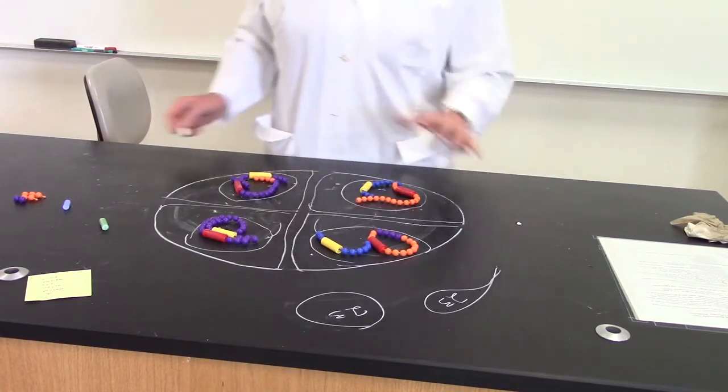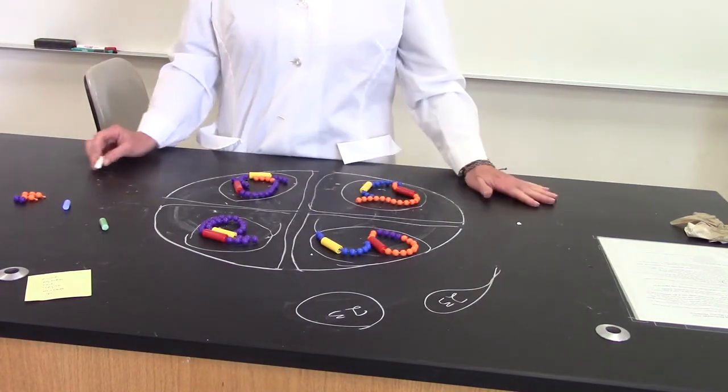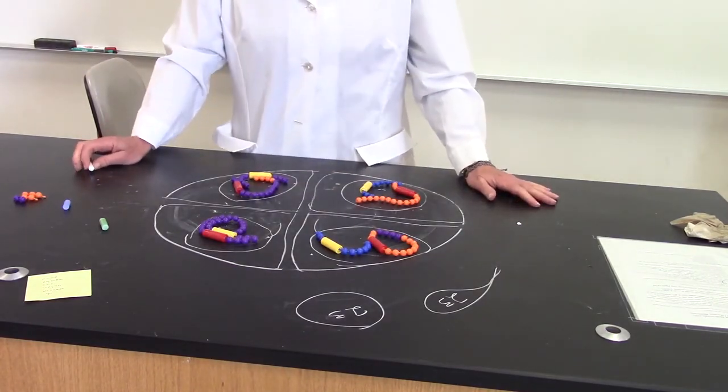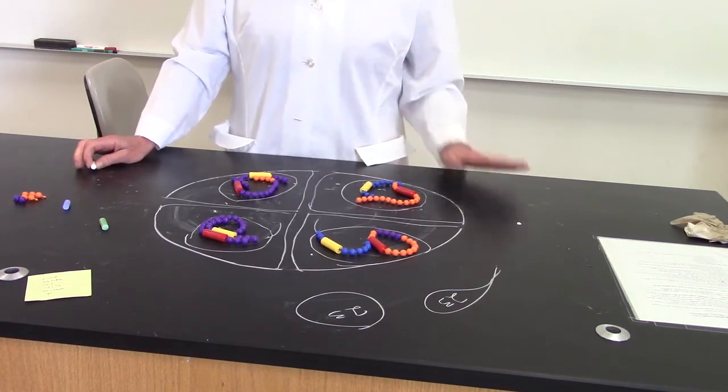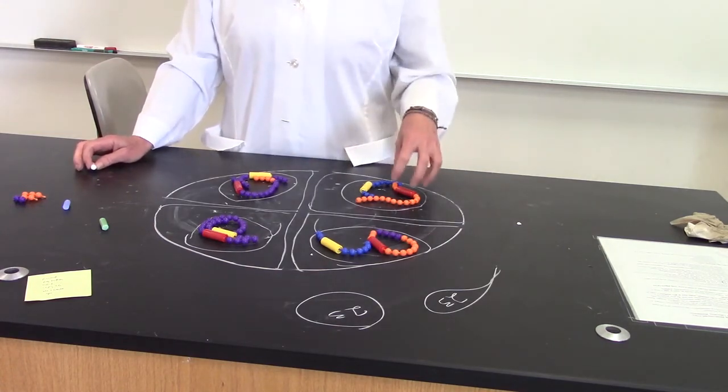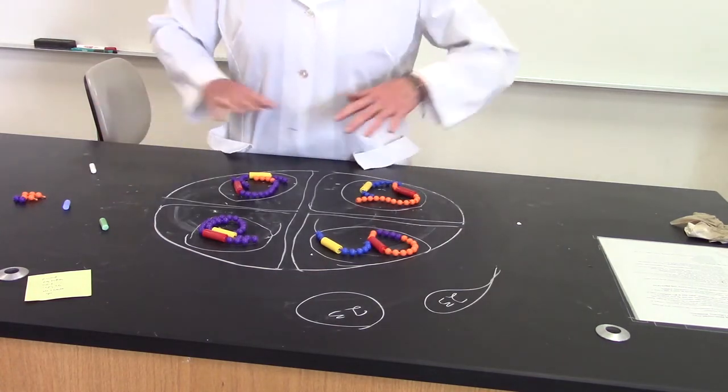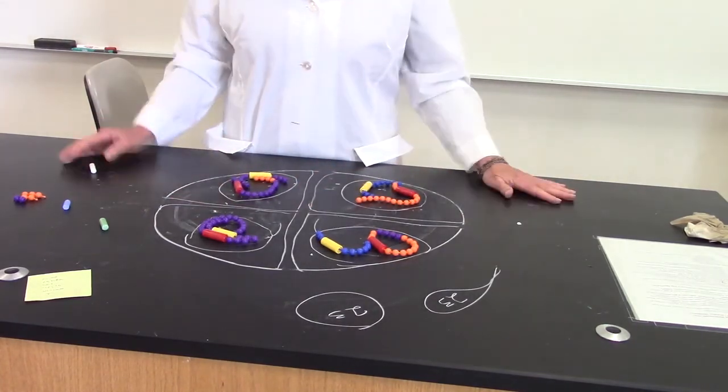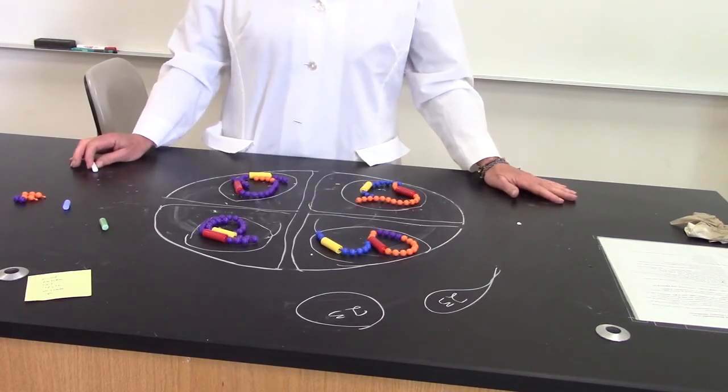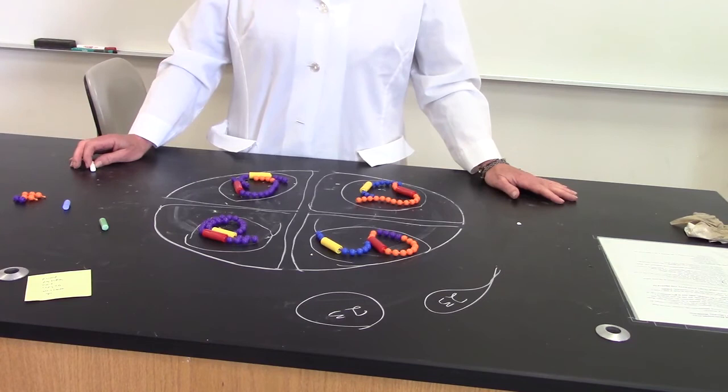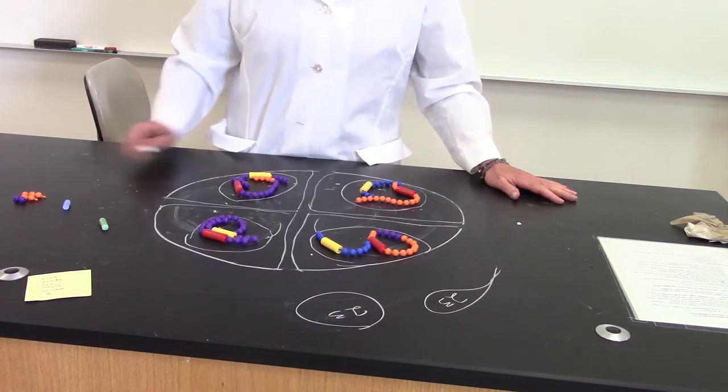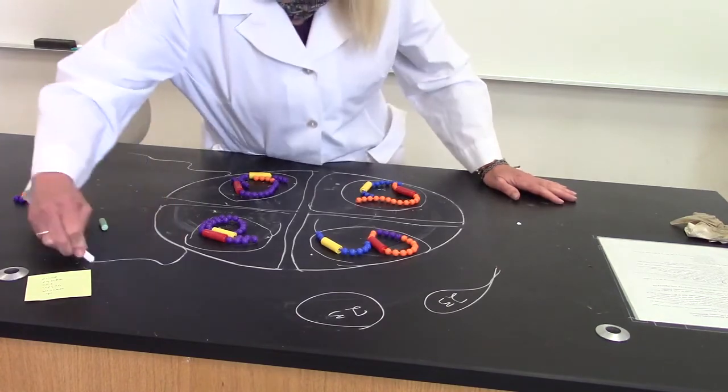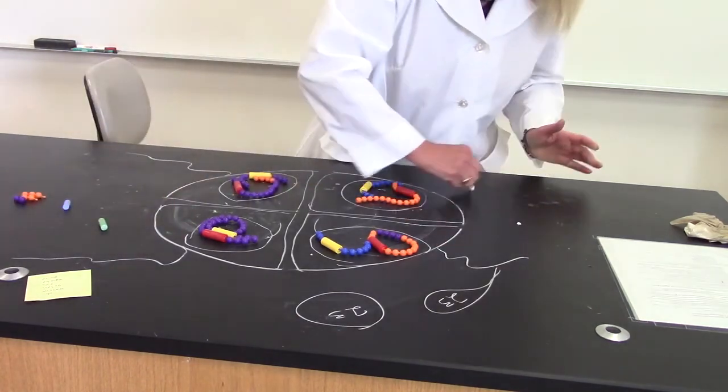Now we end up with four haploid daughter cells, each one unique. The diversity is huge - you will never have the same genetics in your sperm or your eggs your whole life. Pretty amazing. Put a tail on each one of these, and what do you got? Four sperm.